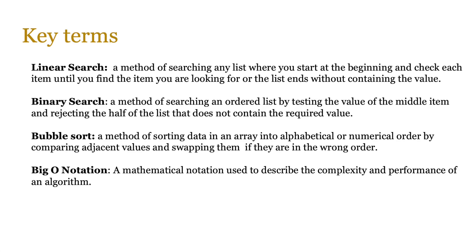Let's begin by looking through some key terms. Linear search: a method of searching any list where you start at the beginning and check each item until you find the item, or the list ends without containing the value. Binary search: a method of searching an ordered list by testing the value of the middle item and rejecting half the list that doesn't contain the required value. Bubble sort: a method of sorting data in an array into alphabetical or numerical order by comparing adjacent values and swapping them if they're in the wrong order. Big O notation: a mathematical notation used to describe the complexity and performance of an algorithm.